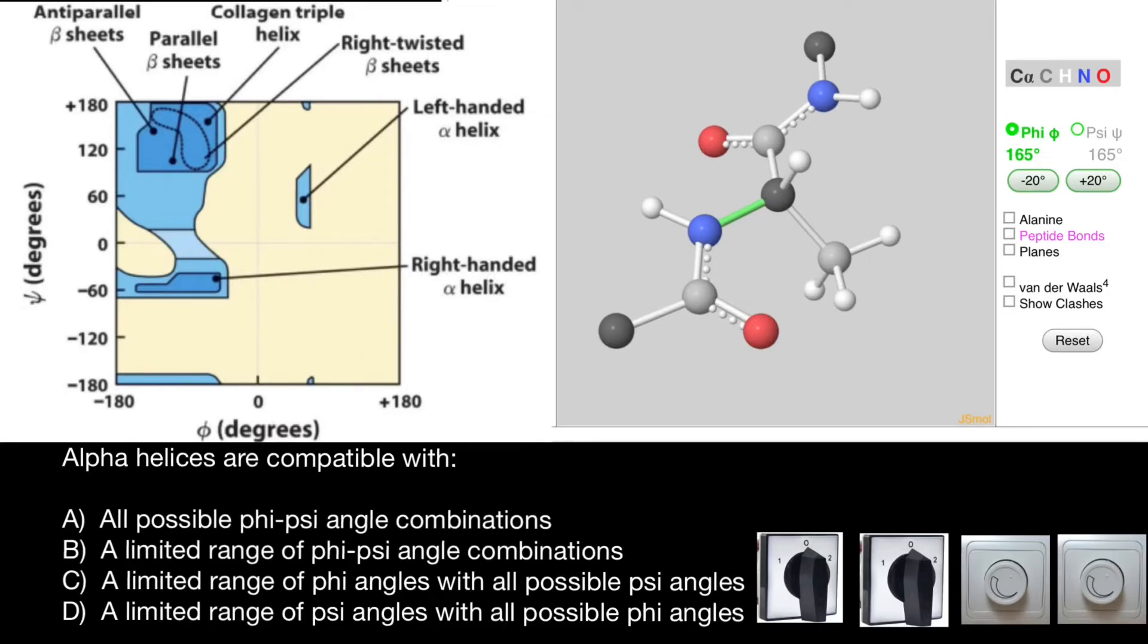Hello, and welcome to Nikolai's genetics lessons. Today's question is: alpha helices are compatible with, and you have to choose one of these answers.